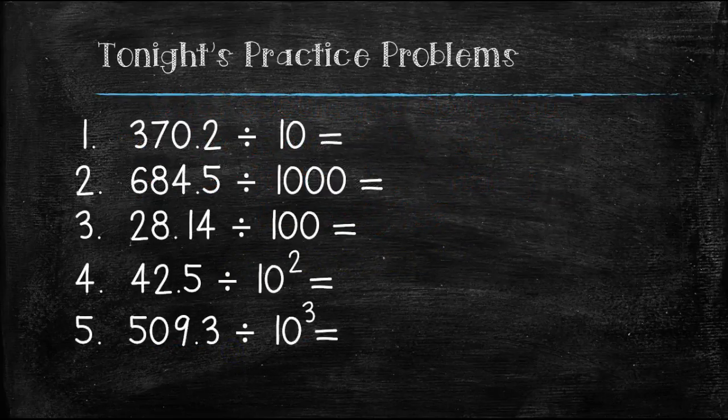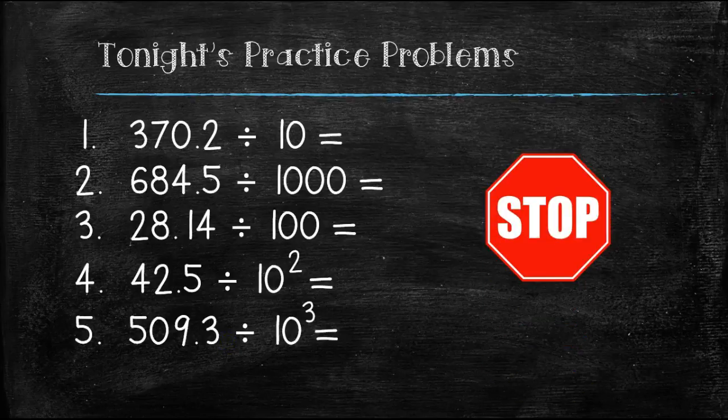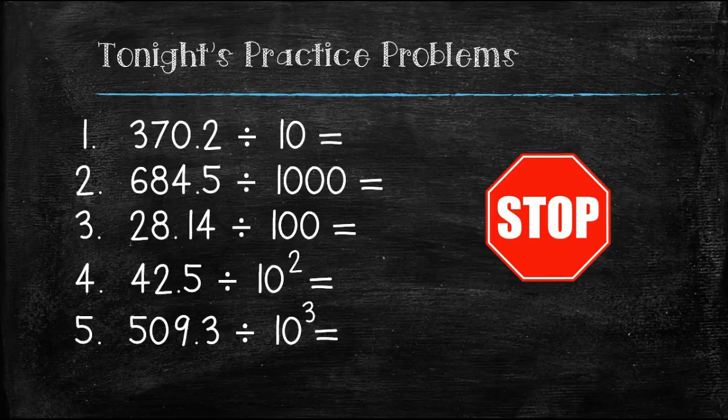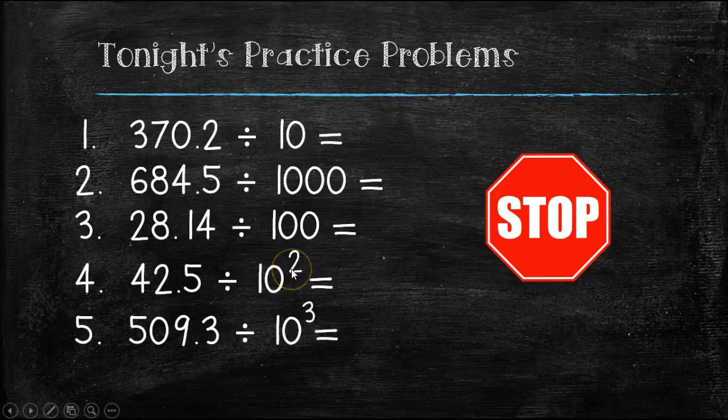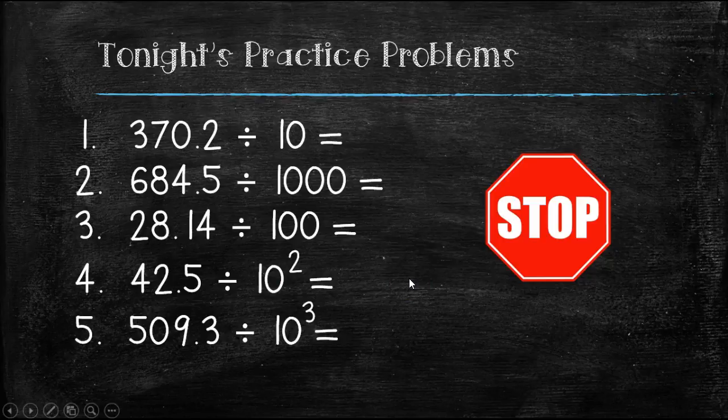Now you try. Here are tonight's practice problems. Go ahead and stop the video after you write the problems down. Figure out the answers and then come back to see if yours are correct. Remember, when we're talking about dividing by 10 to the second, that just means two zeros after the one. 10 to the third means you should have three zeros after the one. Go ahead and stop the video and come back when you're ready.